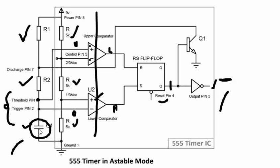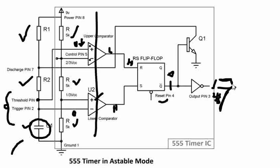Now, when does this output go low? When reset becomes high. When does reset become high? Basically when the voltage on the non-inverting terminal goes greater than 2/3 Vcc — that means when the capacitor charges above 2/3 Vcc — because this capacitor charge is being applied to the non-inverting terminal. When this goes above 2/3 Vcc, the output goes low at that instant.